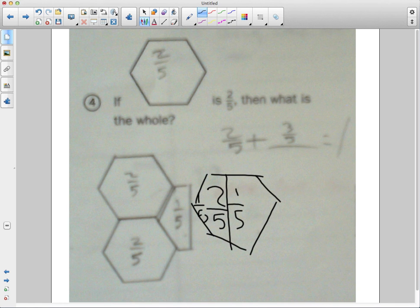What you did is you cut that hexagon in half, and then you added half of a hexagon to get 1/5. And you knew, Chase, that 2/5 plus 2/5 is equal to... or sorry, plus 1/5 is equal to how many fifths? 5/5. And that's equal to one.